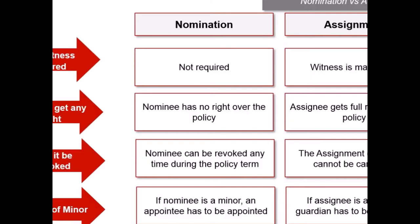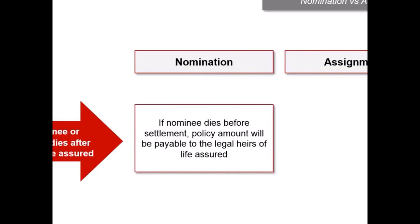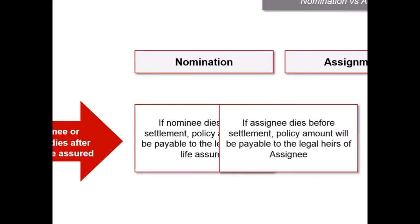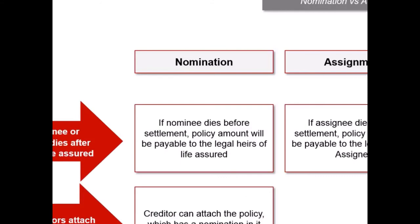Tenth, in case of nominee's death, the rights of the policy revert to the policyholder or to his or her legal heirs, whereas in case of conditional assignee's death, the rights on the policy revert to the life assured based on the terms of assignment. Additionally, if the nominee dies before settlement, the policy amount will be payable to the legal heirs of the life assured, whereas if the assignee dies before settlement, policy amount will be payable to the legal heirs of the assignee.